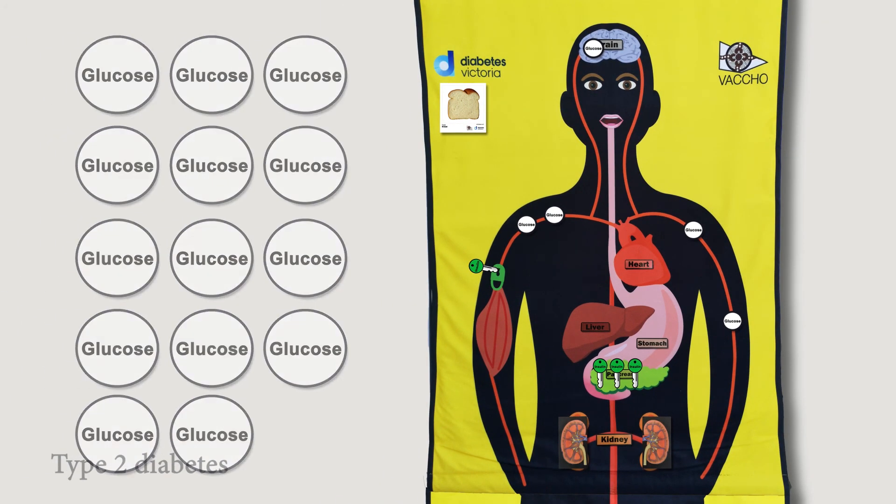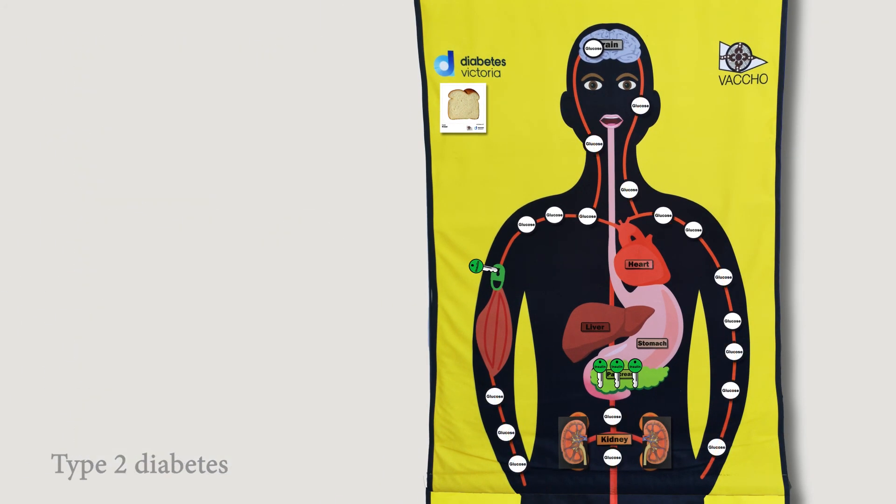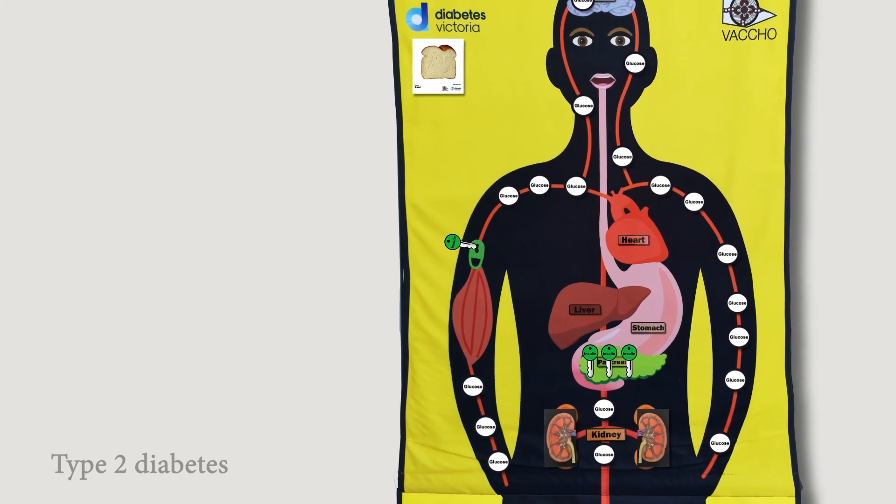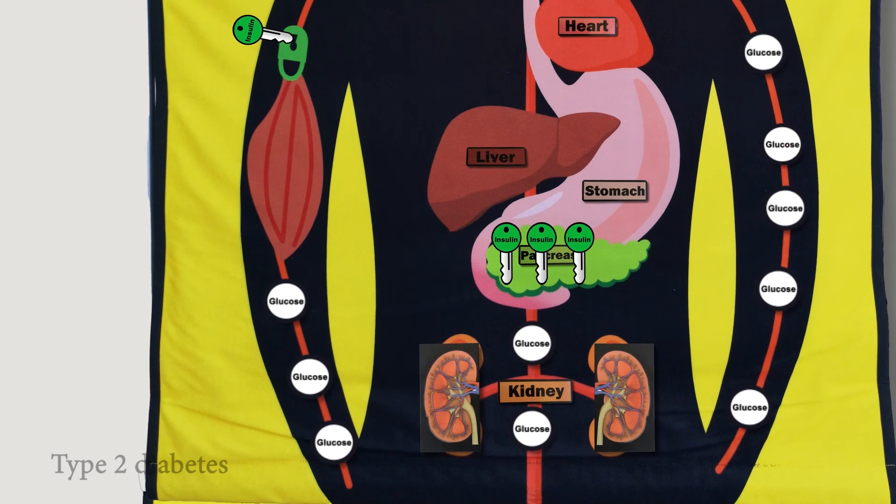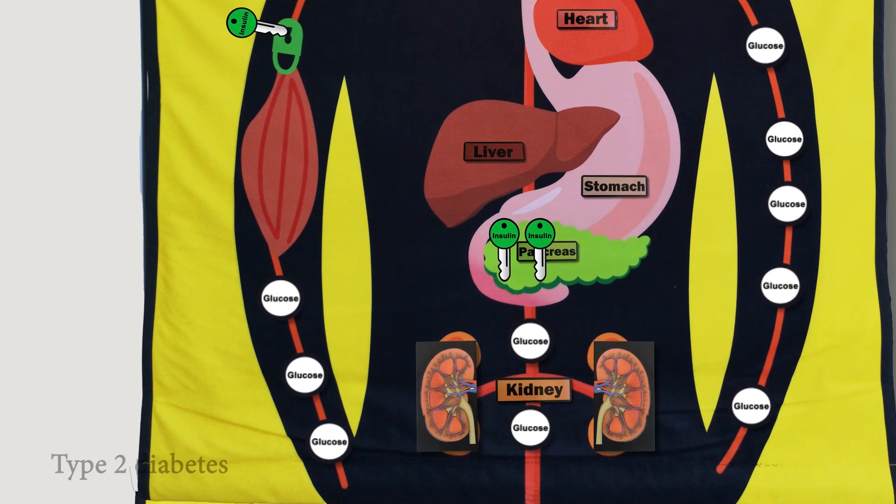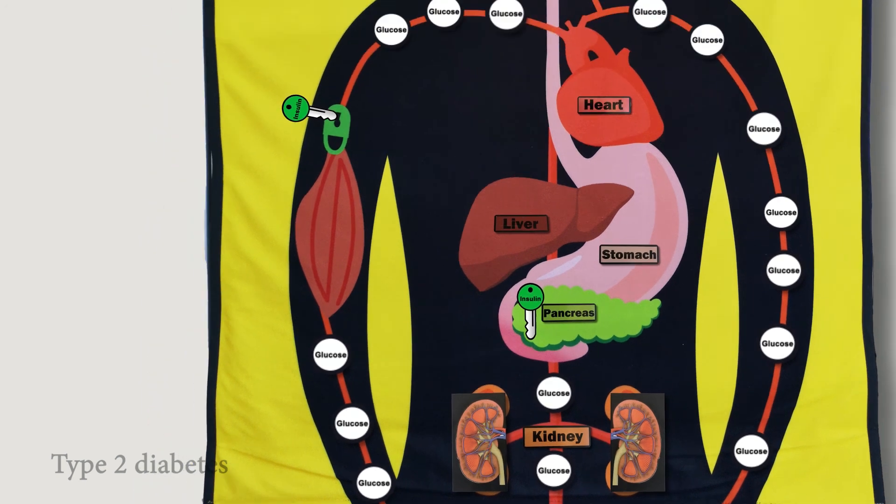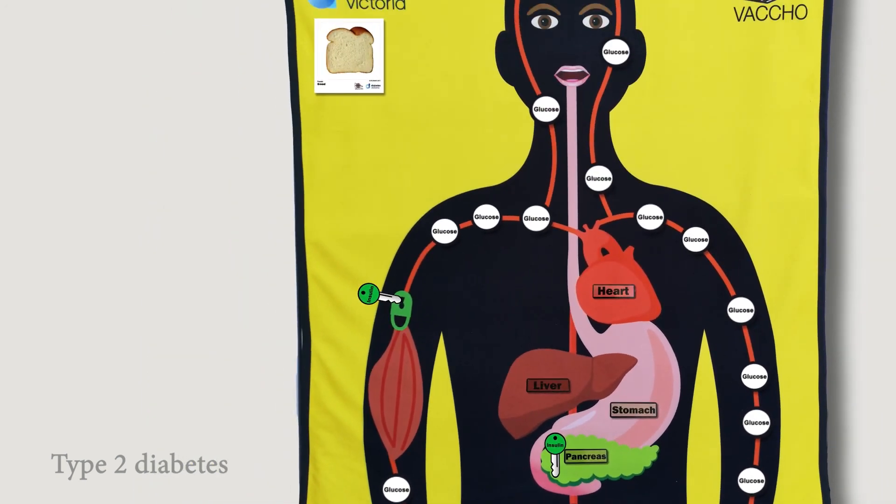This leads to a buildup of glucose in the blood and means that more insulin is needed. While people with type 2 diabetes do make some insulin, it isn't enough to keep blood glucose levels in the normal range. Over time the pancreas can get overworked and make less and less insulin. A person can manage this through healthy eating, exercise and diabetes medications.